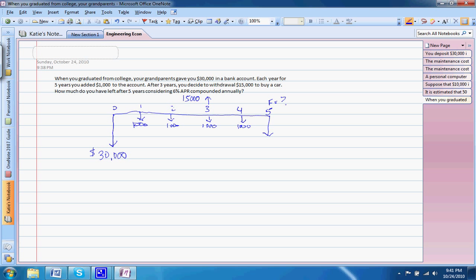So this problem, it's easier to solve if we break out our cash flow diagram into three components. Our first component is our $30,000 in year zero. And we're trying to find that future value of that $30,000 in year five. Plus, we add $1,000 every year for five years, and we want to know that future value.